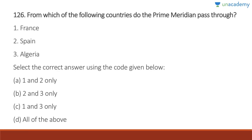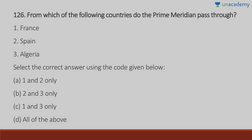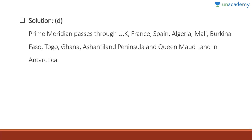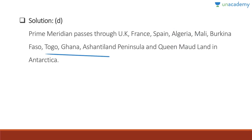Question 126: Through which countries does the prime meridian pass? France, Spain, and Algeria — the answer is D, all of the above. The prime meridian passes through: UK, France, Spain, Algeria in Africa, then Mali, Burkina Faso, Togo, Ghana — all in Africa — and then through Antarctica including Queen Maud Land.